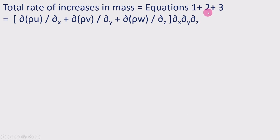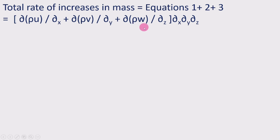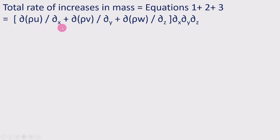The total rate of increase in mass equals equations 1 plus 2 plus 3. Since dx·dy·dz is common to all three terms, we can factor it out and write: [(∂/∂x)(rho·u) + (∂/∂y)(rho·v) + (∂/∂z)(rho·w)]·dx·dy·dz.